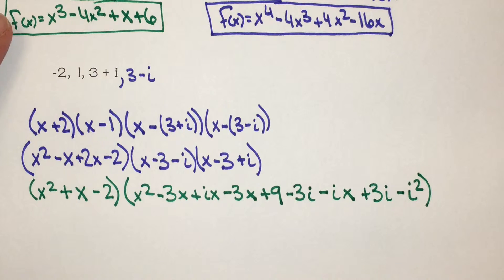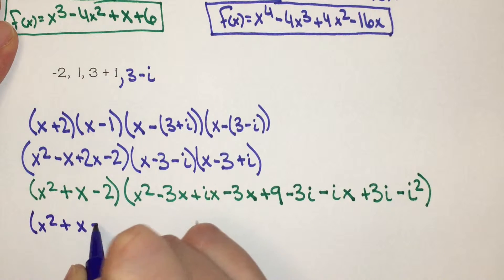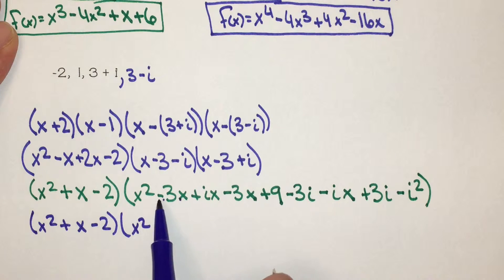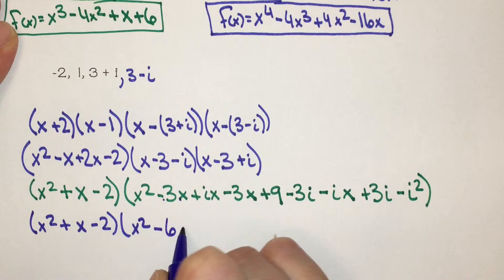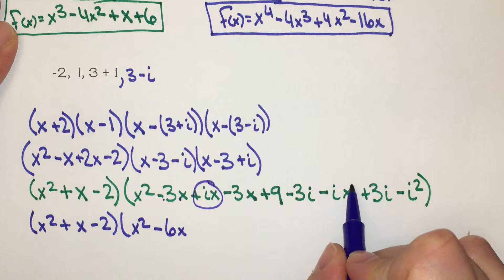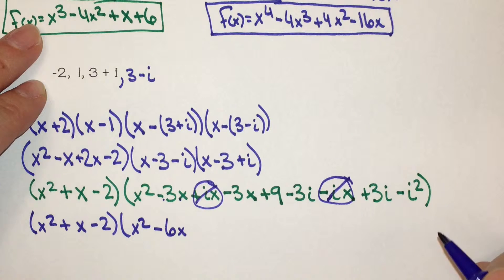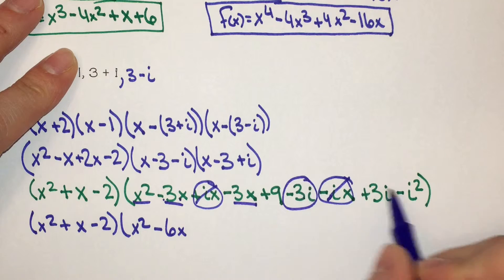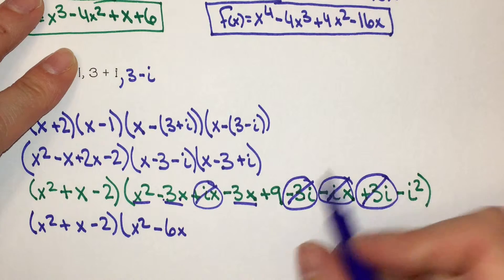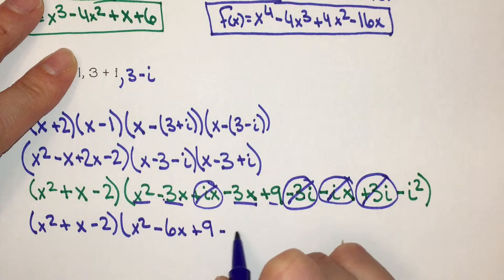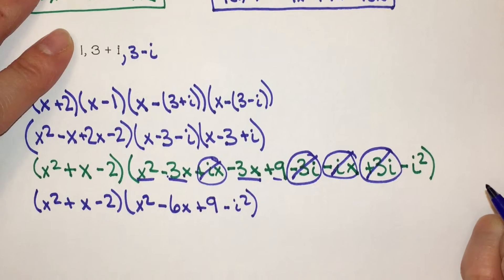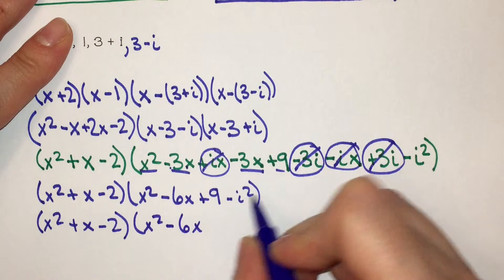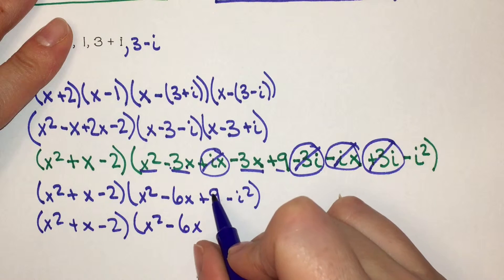Combining like terms: negative 3x minus 3x is negative 6x. Positive ix minus ix cancel out. Negative 3i plus 3i cancel out. We have 9 minus i squared, and since i squared equals negative 1, negative times negative 1 is positive 1, so 9 plus 1 is 10. The conjugate pair simplifies to x squared minus 6x plus 10.